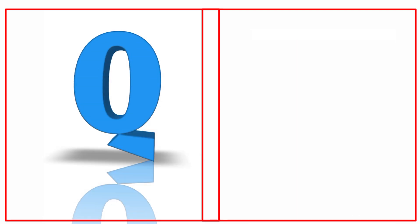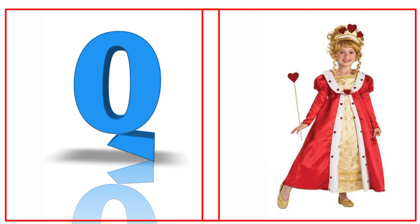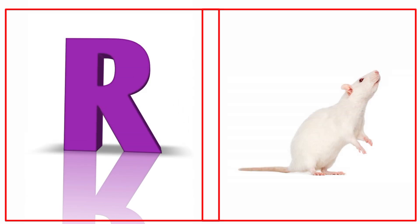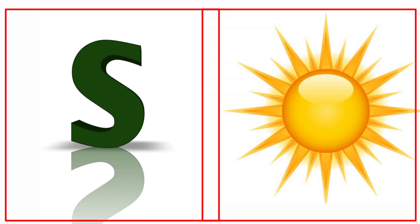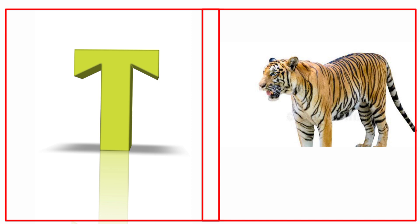Q for queen. R for rabbit. S for sun. Sun means sooraj. T for tiger. Tiger means cheetah.